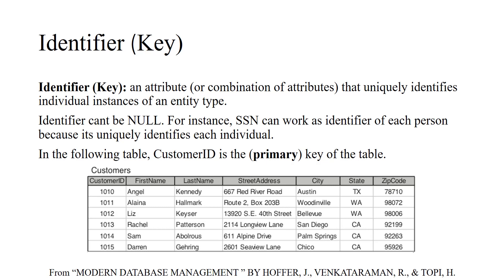Going back to the customer table — it has customer ID, first name, last name, street address, city, state, and zip code. One column is very important: customer ID. If we want to identify each row uniquely, customer ID is the one we use. For example, if I say 'who is customer 1010,' we can immediately identify that customer. If I say 'who is customer 1012,' we can easily identify it — bringing up exactly one record, not multiple rows.